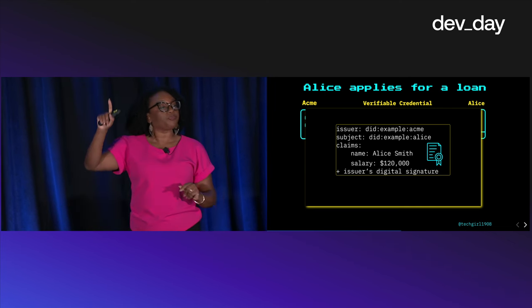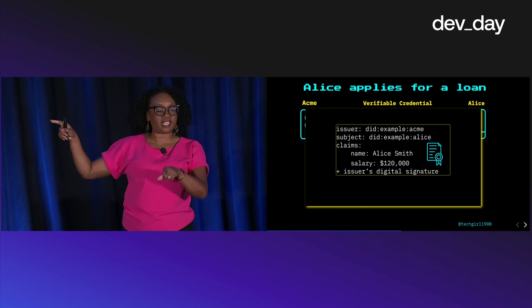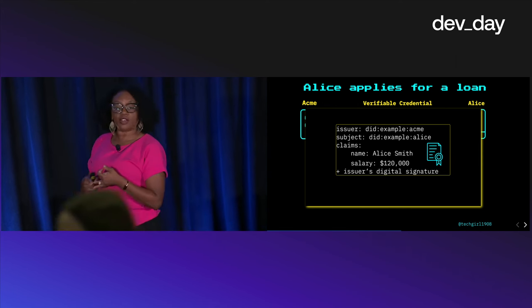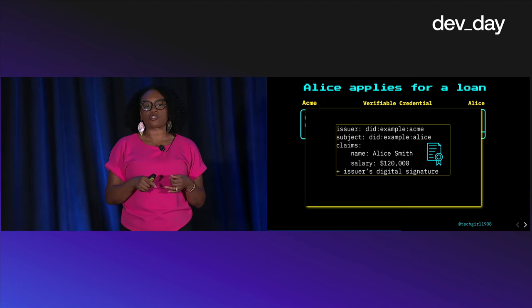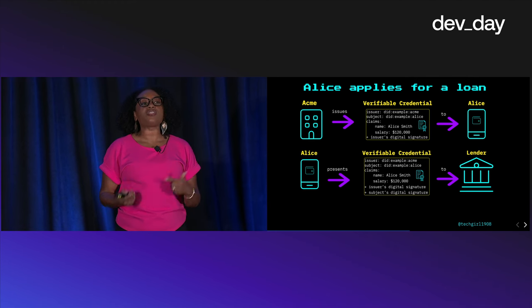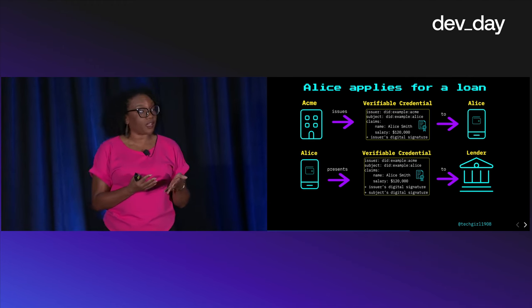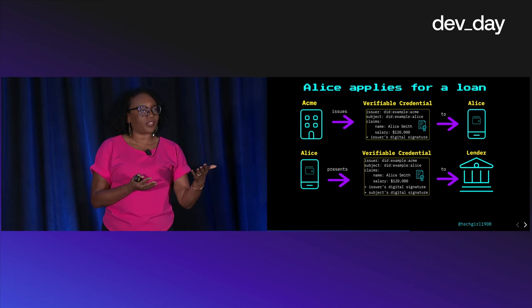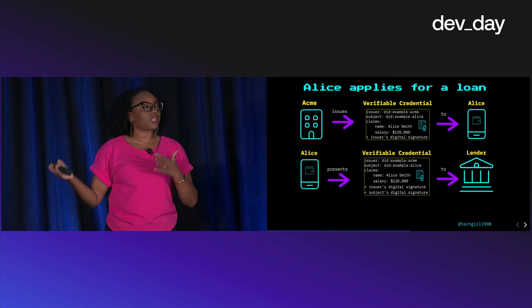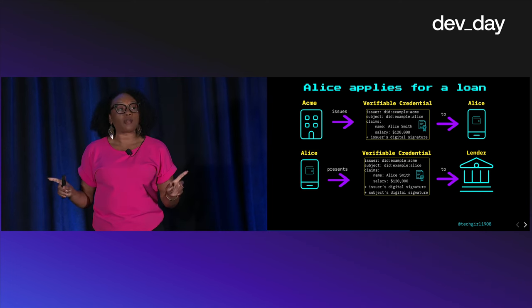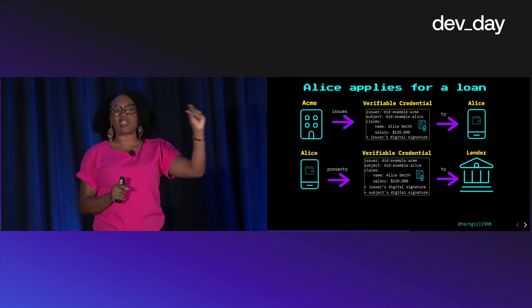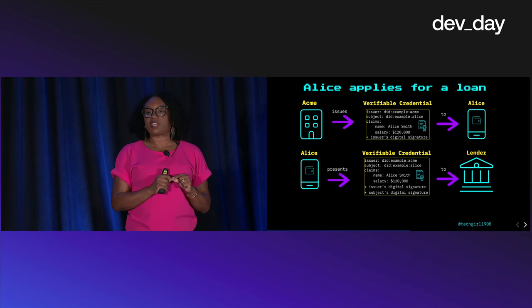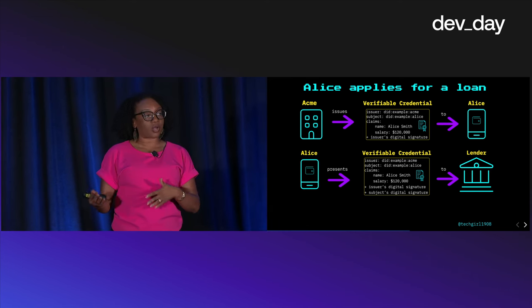ACME is saying the person with decentralized identifier did:example:alice — her real name is Alice Smith and her salary is $120,000 — and then ACME has cryptographically signed this verifiable credential. Alice keeps that in her digital wallet, and when the lender asks for proof of income, she presents this verifiable credential, cryptographically signs it as well, and the lender can continue with the loan application. The lender doesn't know or trust Alice, but it considers ACME a trustworthy entity — ACME's decentralized identifier is there, cryptographically signed — so ACME has extended trust to Alice.